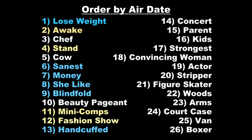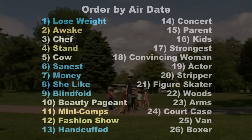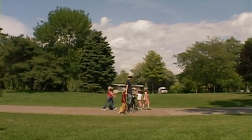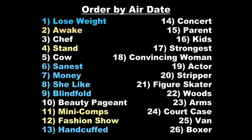The summer cycle is the most difficult to determine, because all of the outdoor shots look the same — they all have beautiful green leaves and sunshine. So they are the majority of the remaining episodes: Chef, Cow, Beauty Pageant, Concert, Parent, Kids, Strongest, Convincing Woman, Actor, Stripper, Figure Skater, Woods, Arms, and Court Case.